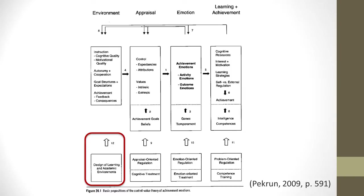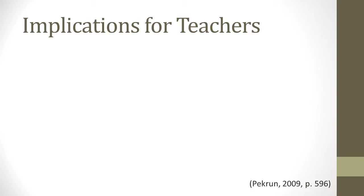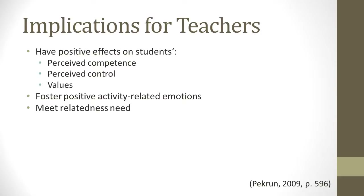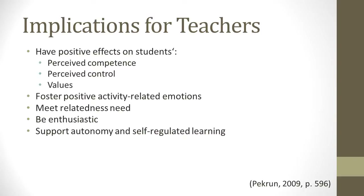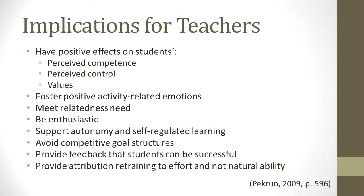Now let's consider what can be done to design effective learning environments with considerations for students' emotions. Pekrun discusses how instruction and assignments should have positive effects on students' perceived competence, perceived control, and values. He also gives implications including that instructors should foster positive activity-related emotions, meet relatedness needs, be enthusiastic, support autonomy and self-regulated learning, avoid competitive goal structures, provide feedback that students can be successful, provide attributional training to effort and not natural ability, and help students self-regulate emotions.